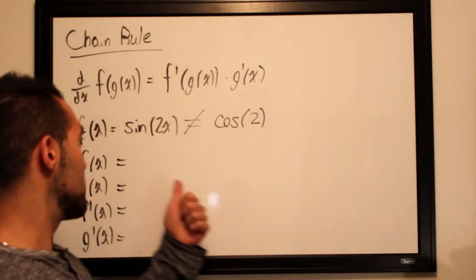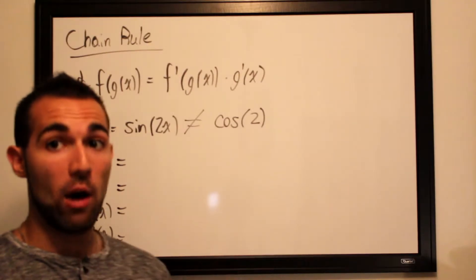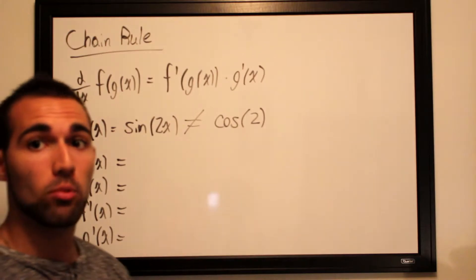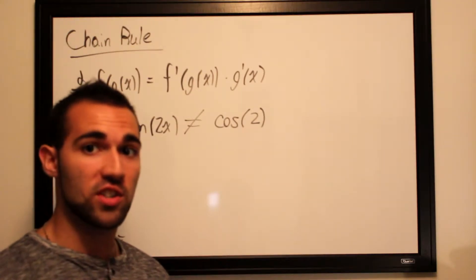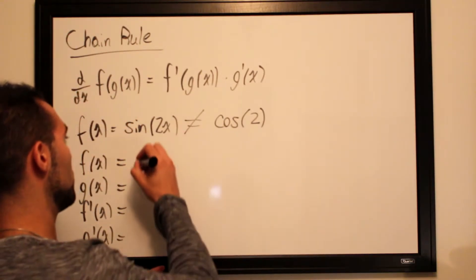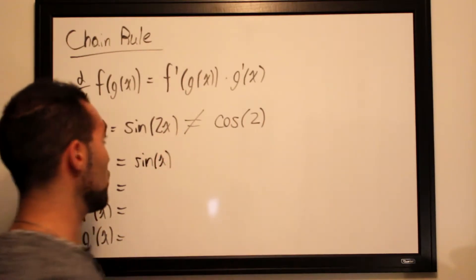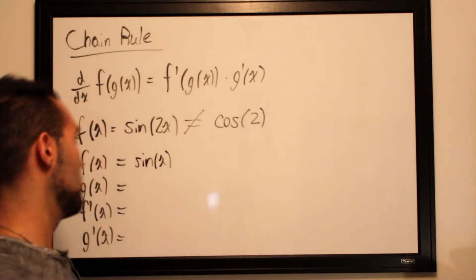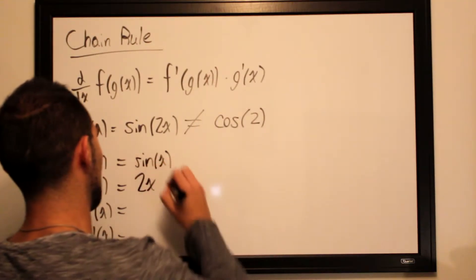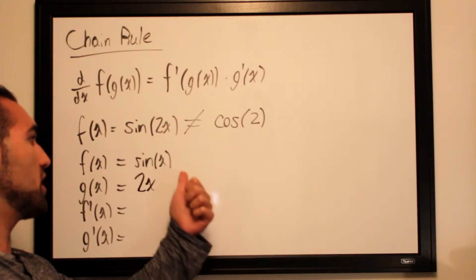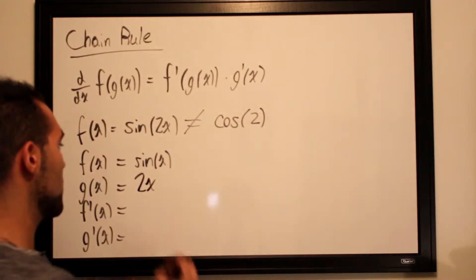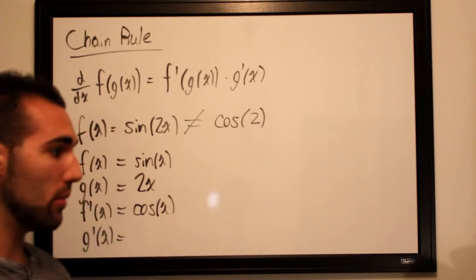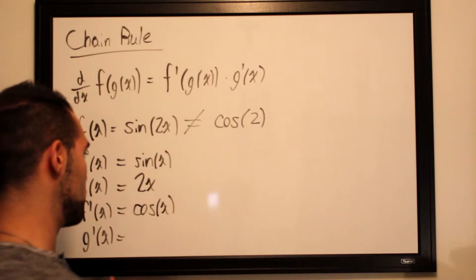Our f(x), the outer function, will be sine of x because 2x is trapped within the sine. Our inner function g(x) is 2x. Our f'(x) is cosine of x — the derivative of sine of x — and our g'(x) is 2, the derivative of 2x.